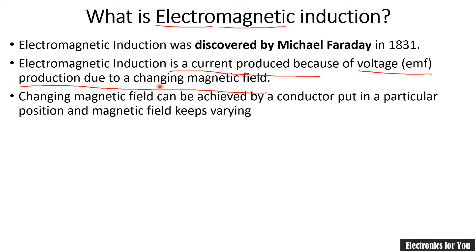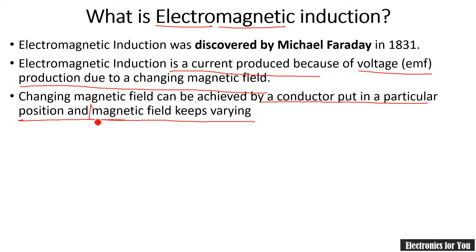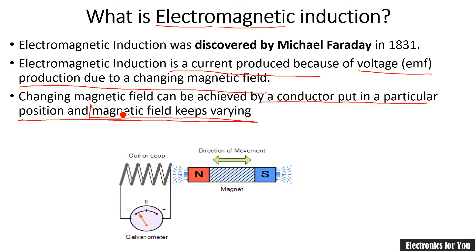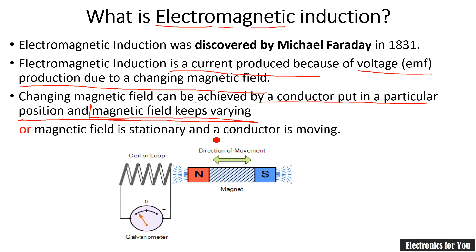This production of EMF is due to the change in magnetic field. This change in magnetic field can be generated by two different ways. First, it can be achieved by a conductor placed in a particular position while the magnetic field keeps varying. The second way is to keep the magnetic field stationary and have the conductor moving.